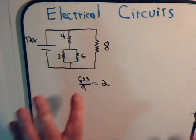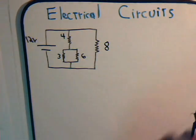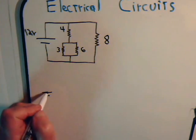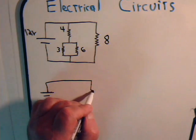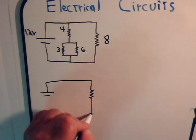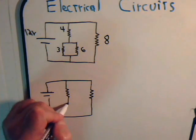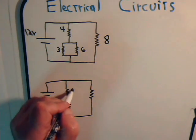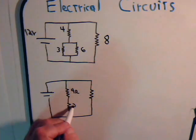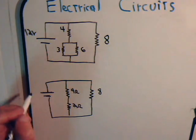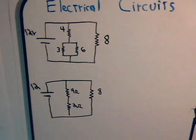So we can replace this with a single resistor that has a value of 2 ohms. Let's just do that real quick. So this is 4 ohms, this is 2 ohms, this is 8 ohms with our voltage source of 12 volts.